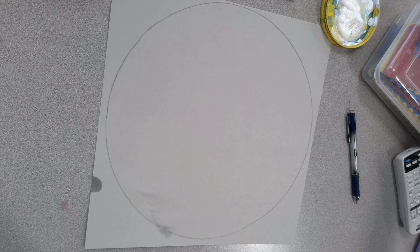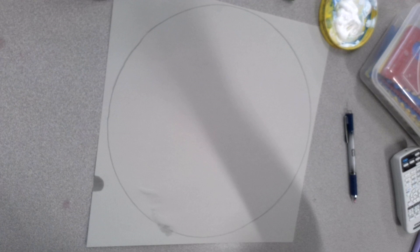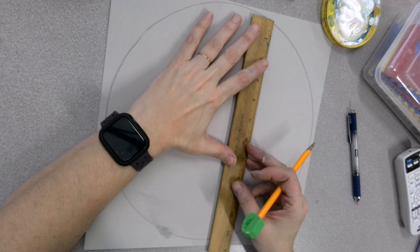All right, so then next you're just going to use a straight ruler, a straight edge. You might not have a ruler, you might have a straight edge. Do we have to use one of these?